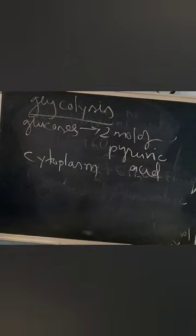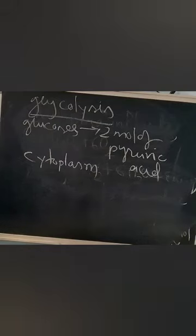In glycolysis, glucose first gives glucose-6-phosphate, then fructose-6-phosphate, then fructose-1,6-bisphosphate. Fructose-1,6-bisphosphate is split into 3-phosphoglyceraldehyde and dihydroxyacetone phosphate. 3-phosphoglyceraldehyde is then converted into 1,3-bisphosphoglyceraldehyde, then 1,3-bisphosphoglyceric acid, then 3-phosphoglyceric acid, then 2-phosphoglyceric acid, then 2-phosphoenolpyruvic acid, and finally two molecules of pyruvic acid.